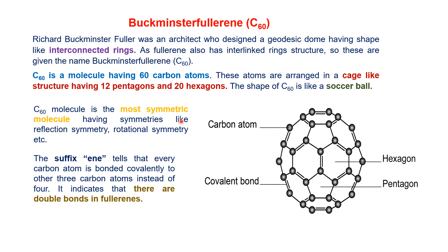C60 is the most symmetric molecule and it has many symmetries, including reflection symmetry, rotational symmetry, and others. The suffix '-ene' in philorene tells us that every carbon atom is linked by a covalent bond to other carbon atoms, and every carbon atom is attached to 3 carbon atoms, not 4. This means there is also a double bond between carbon atoms, which is why the '-ene' suffix for double bonds is used in naming the philorene.